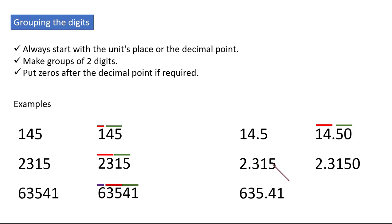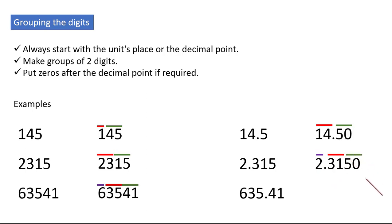Similarly, 2.315 can be written as 2.3150. Here, 2 is left alone so it will be the first group, 31 will be the second group, and 50 will be the third one. Similarly for 635.41, 35 will be the first group, 6 will be left alone, and 41 will be the third group.